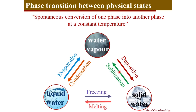All these processes are phase transition processes — one phase is converted to another phase. At a given pressure, each phase transition is characterized by a certain temperature called the phase transition temperature: freezing point for freezing, melting point for melting, and so on.